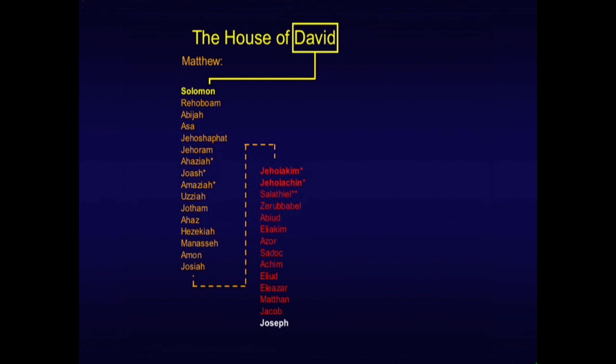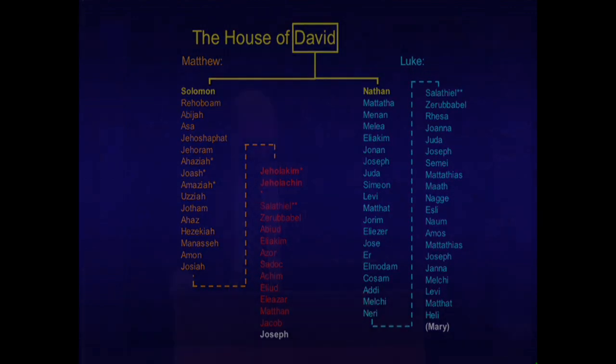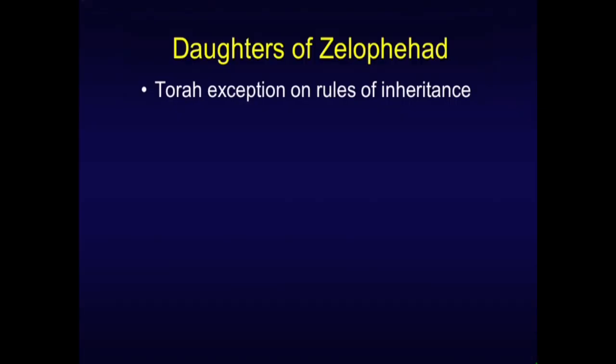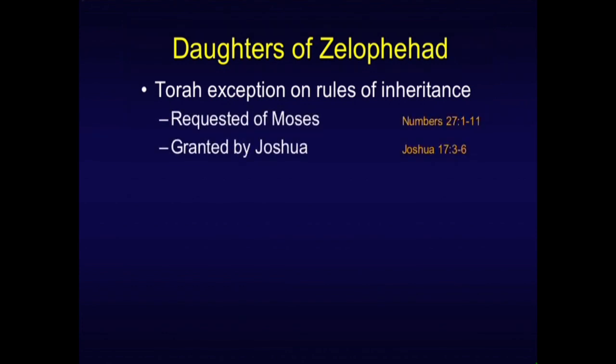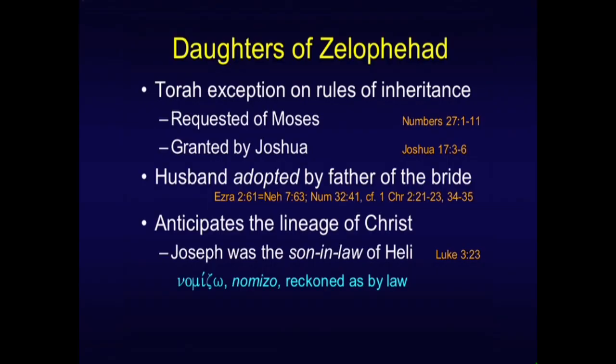Luke, being a doctor interested in Christ's humanity, takes a different path starting from Adam. When Luke gets to David, he takes a left turn through Nathan, the second surviving son of Bathsheba, and comes down to Mary. If we read the text carefully, we discover Joseph is the son-in-law of Eli, Mary's father. This comes from the daughters of Zelophehad — the Torah exception on inheritance requested of Moses in Numbers 27 and granted by Joshua in Joshua 17. If a father had only daughters and the daughters married within the tribe, the husband could be adopted by the father of the bride to raise up inheritance to the line. If you check the Greek of Luke 3:23, it's a 'nomizo' — reckoned as by law — meaning son-in-law.